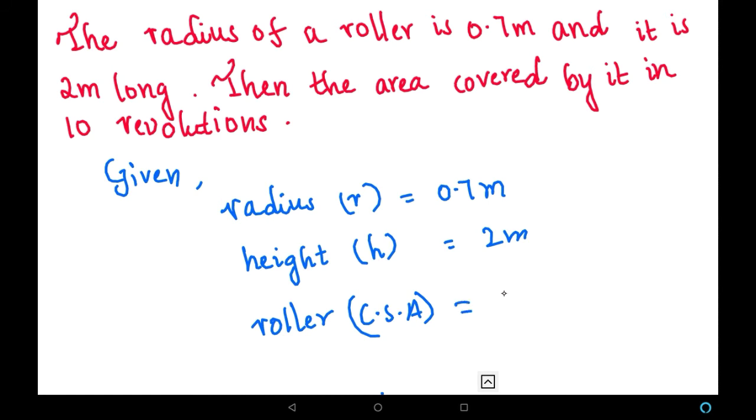They are asking for area covered, so we have to calculate the curved surface area of this roller. That will be 2πrh. It is nothing but 2 into π value 22 by 7 into r value 0.7.